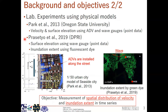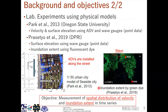The other example is Krautwald et al. 2019. They introduced wave gauges around the street and created surface elevation using point data. Furthermore, they introduced fluorescent dye colored in green to detect the inundation extent. Both models obtained velocity data; however, velocity data is point data only. So our objective is the measurement of the spatial distribution of velocity and the inundation extent in time series.